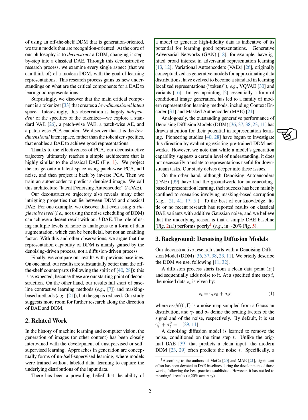Similarly, the impressive generative performance of denoising diffusion models, DDM, has attracted attention for their potential and representation learning. Some studies have started to investigate this direction by evaluating pre-trained DDM networks. However, while a model's generation capability suggests a certain level of understanding, it doesn't necessarily translate to representations useful for downstream tasks.